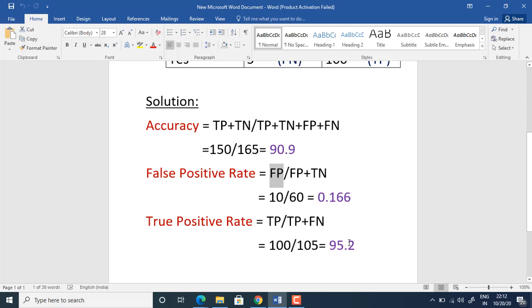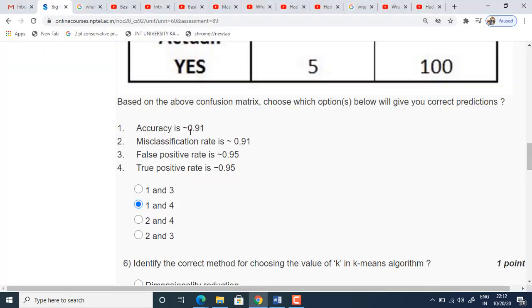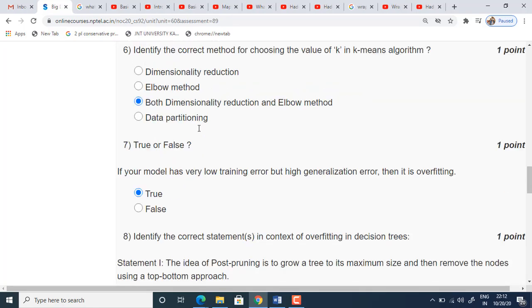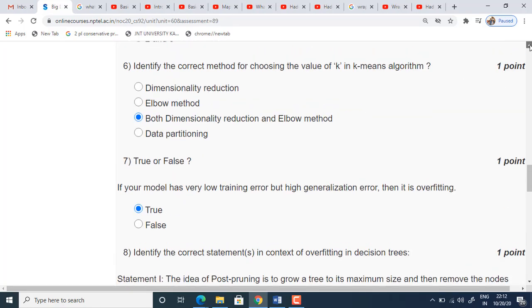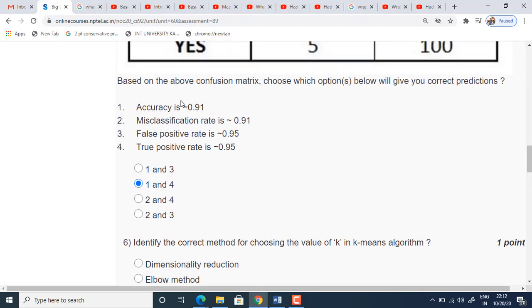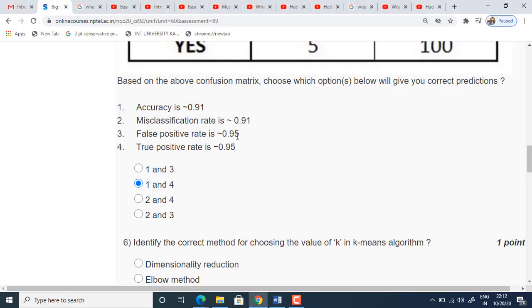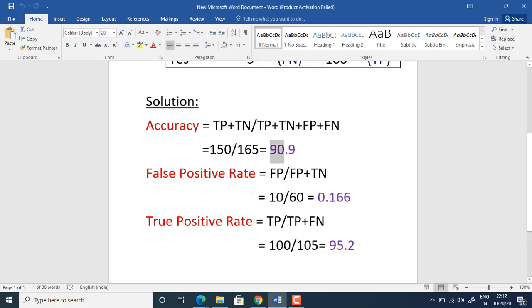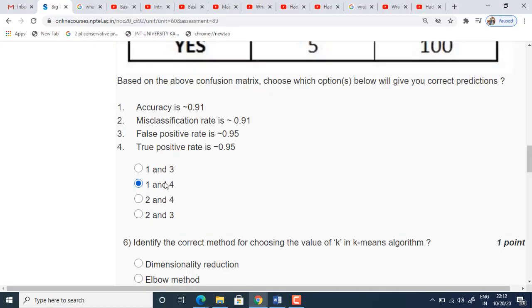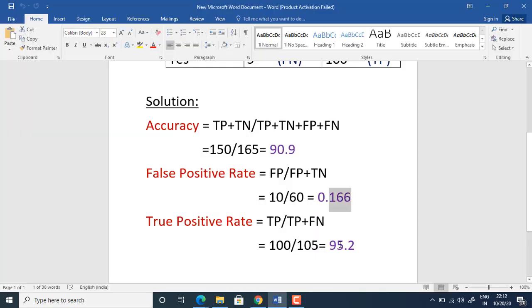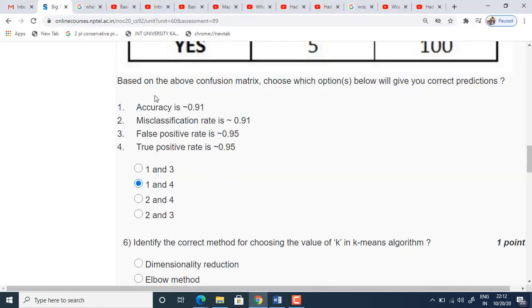If you cross verify the values here, accuracy is 91% approximately. So the answer is true. Accuracy is 91%, we got approximately 91%. And false positive rate is 0.95. But the false positive rate which we got is 0.16. So the third option is wrong. True positive rate is 0.95, and we got 0.95 here also. This is true. So 1 and 4 are true. So 1 and 4 are the right answer for this question.